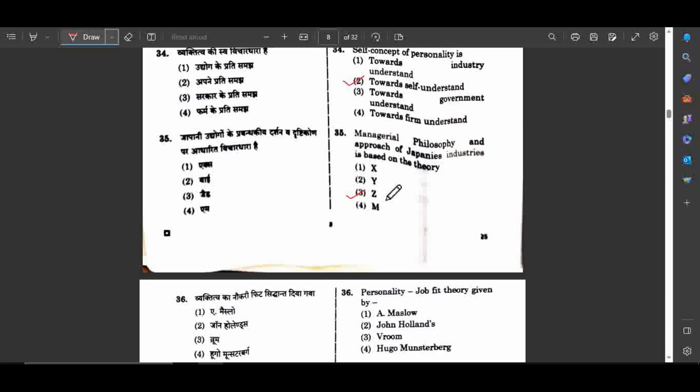According to this theory, a company should invest in its employees enough to provide long-term security and family-like treatment, both on the job and off the job, so that their loyalty to the company remains intact. Japanese management style is based on Theory Z, given by Dr. William Ouchi.